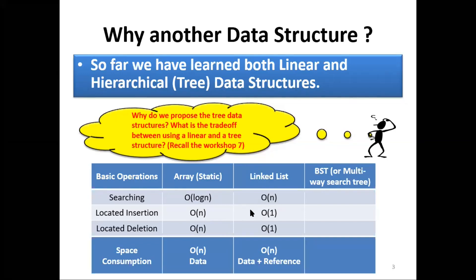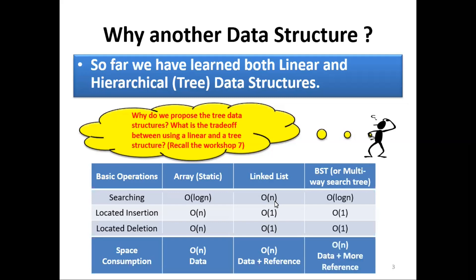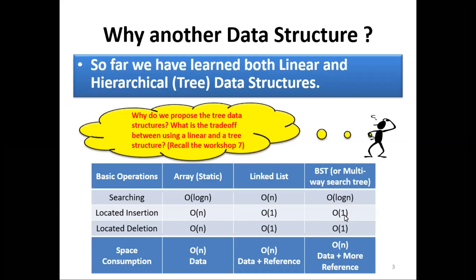The linked list reduced insertion complexity to the order of one. However, the problem with the linked list is that operations involving searching have complexity of the order of n. When the binary search tree was introduced, the challenges with arrays and linked lists in terms of searching and inserting were reduced. The problem of inserting data, which was order of n, was reduced to order of one in the binary search tree. And searching, which was order of n in the linked list, was reduced to order of log n in the binary search tree.